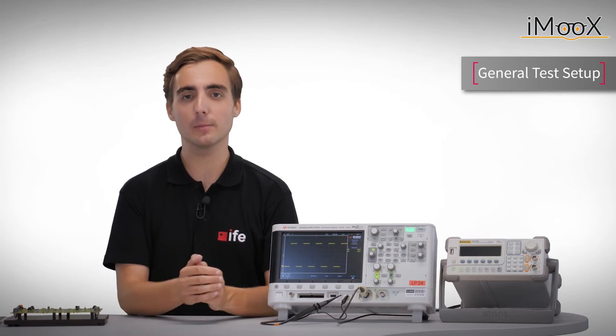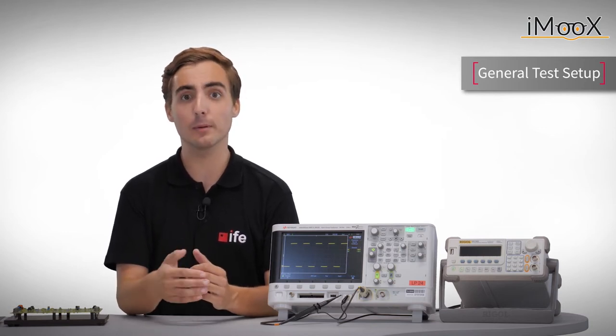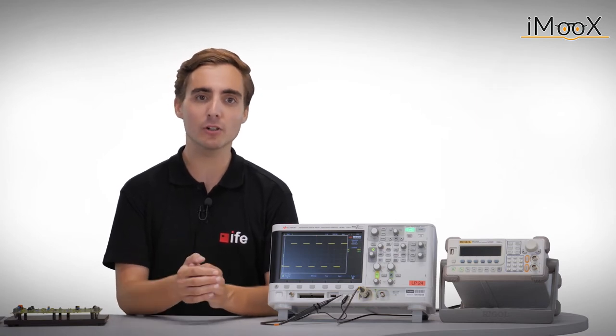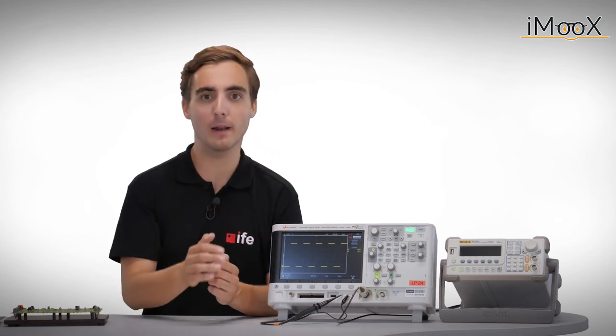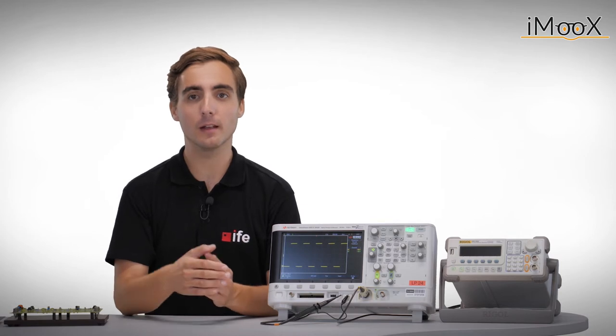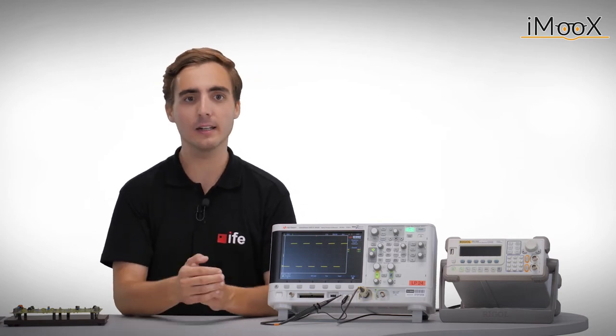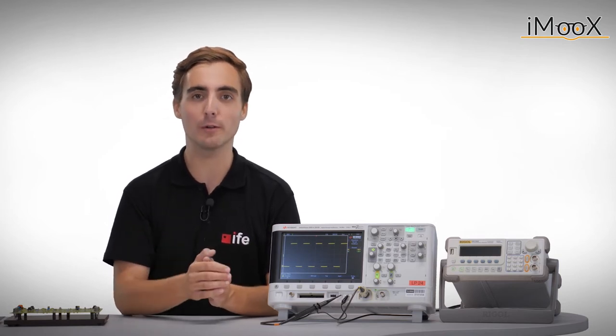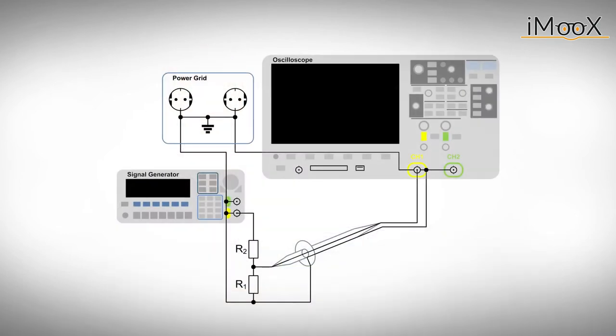Before we start our measurements, a few words have to be said about the test setup in general. We have to take care here, as usually the ground potentials of both scope and power supply are the same and connected together via the power grid. In contrast to a handheld multimeter which is isolated, the reference potentials of a scope must not be set to any arbitrary potential in general. To emphasize this problem, we investigate this simple test setup. It only consists of a voltage divider circuit, the signal generator, and the scope with its probe.